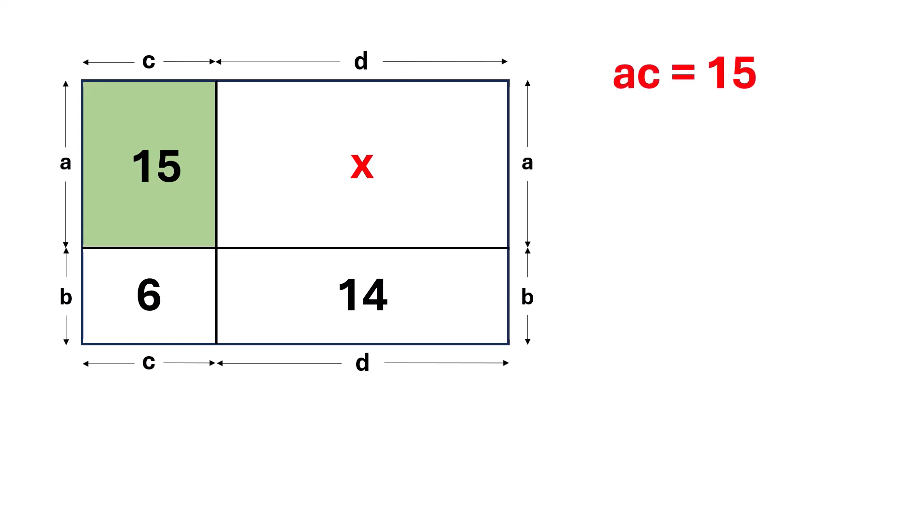Let's call this equation number 1. Similarly, in this green rectangle, the length is C and the width is B. The area is given as 6. So, we get the equation BC equals 6.